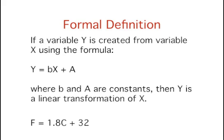If a new variable Y is created from variable X using the formula Y equals bX plus A, where b and A are constants, then Y is a linear transformation of X. In the temperature example, Y is degrees Fahrenheit, X is degrees centigrade, b equals 1.8, and A equals 32.